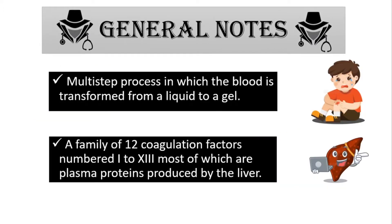At the beginning, let us give some general notes. First, the coagulation cascade is a multiple-step process in which blood is transformed from liquid to gel. Basically, if you are injured and there is a wound or cut, this cascade will be commenced, effectively sealing the breaks in the blood vessels so the bleeding can stop.